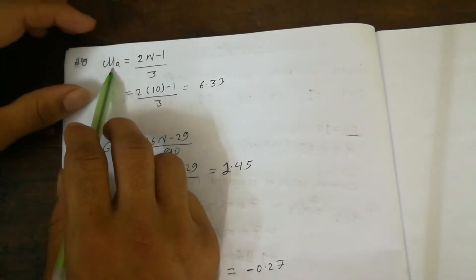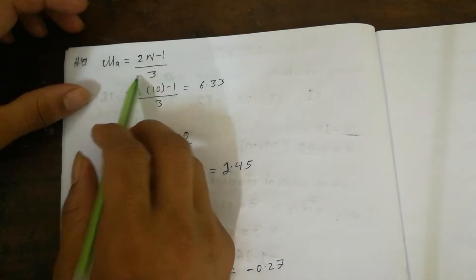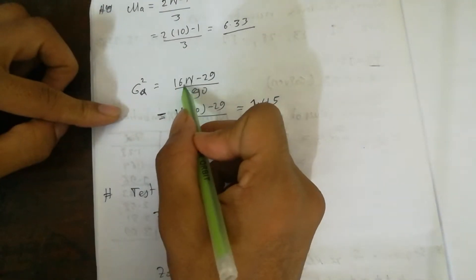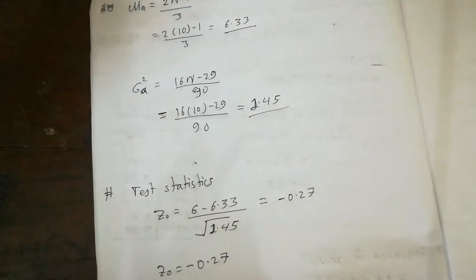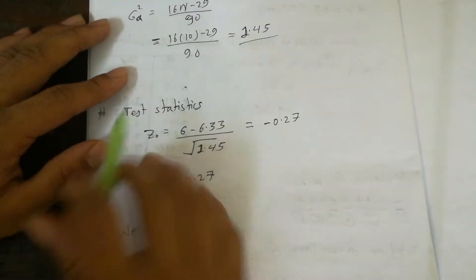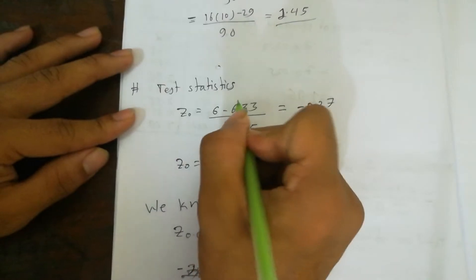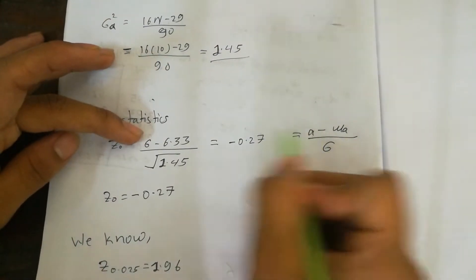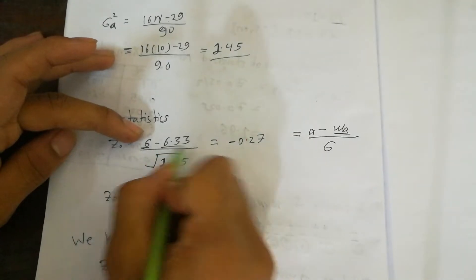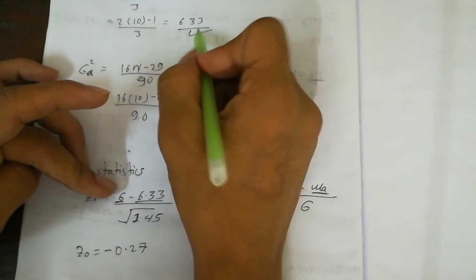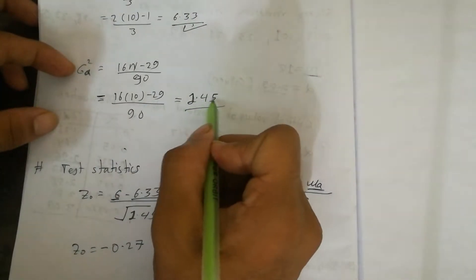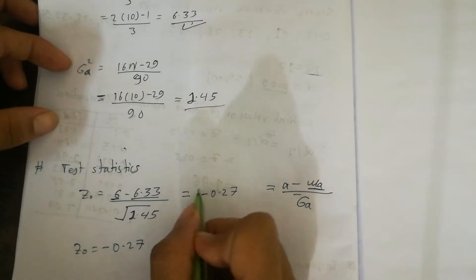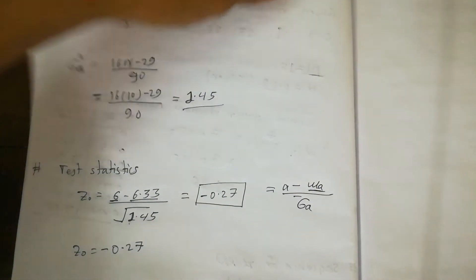Next, we calculate the mean and variance. The mean: μ_a = (2×10 − 1) / 3 = 6.33. The variance: σ²_a = (16×10 − 29) / 90 = 1.45. The test statistic: z₀ = (a − μ_a) / √(σ²_a) = (6 − 6.33) / √1.45 = −0.27.